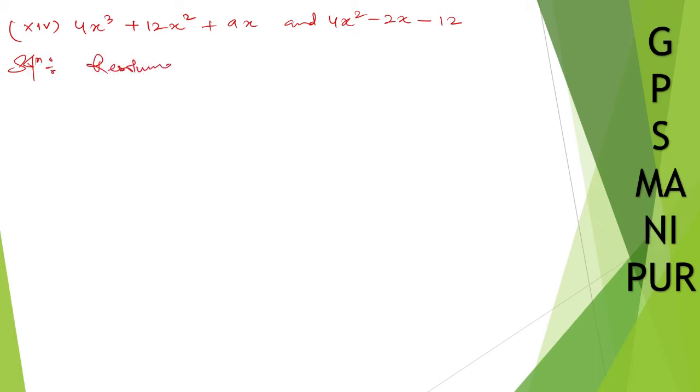Resolving the given polynomials into factors. We have 4x³ + 12x² + 9x equals... From this you can take x common. So take x common.